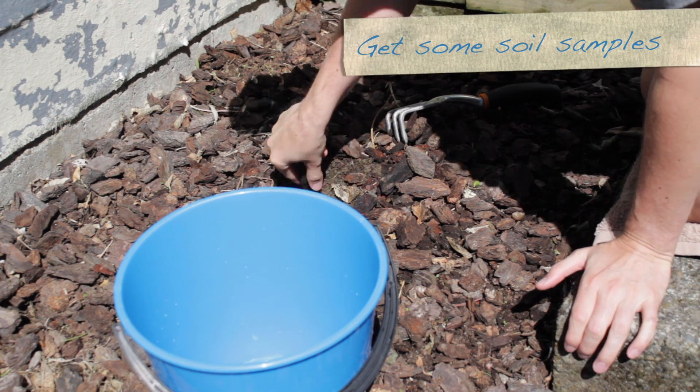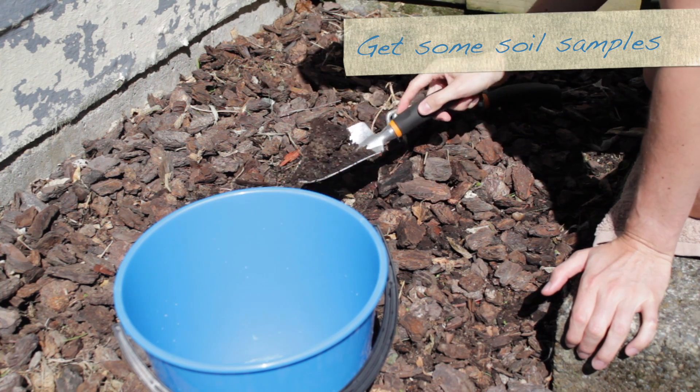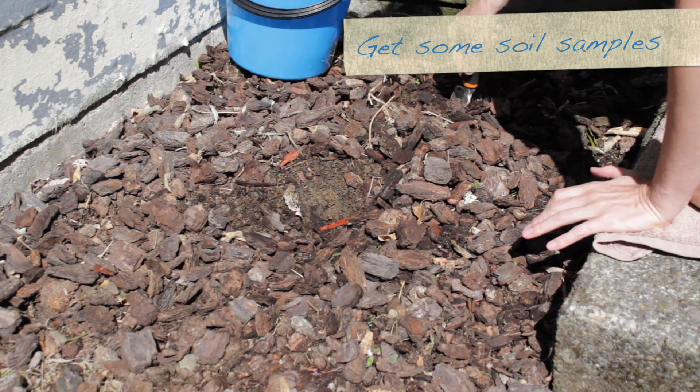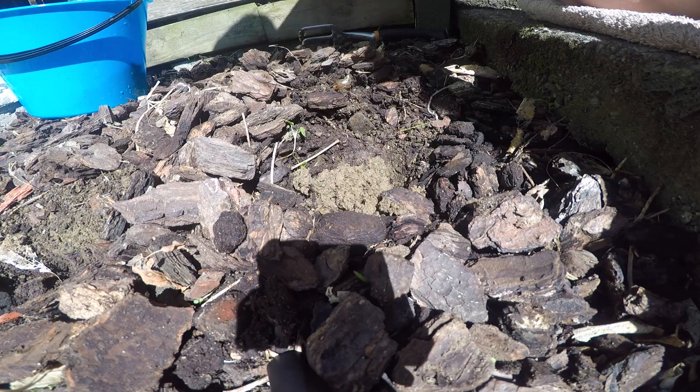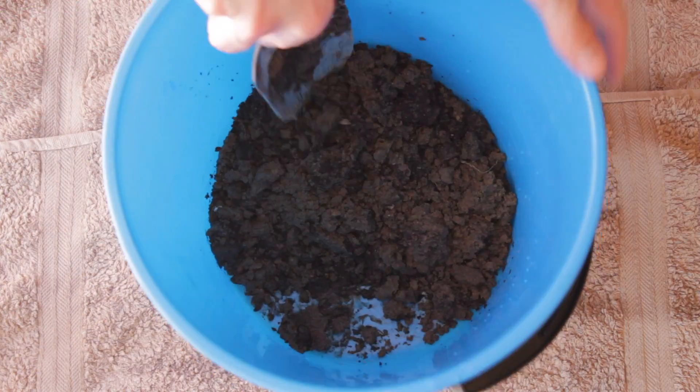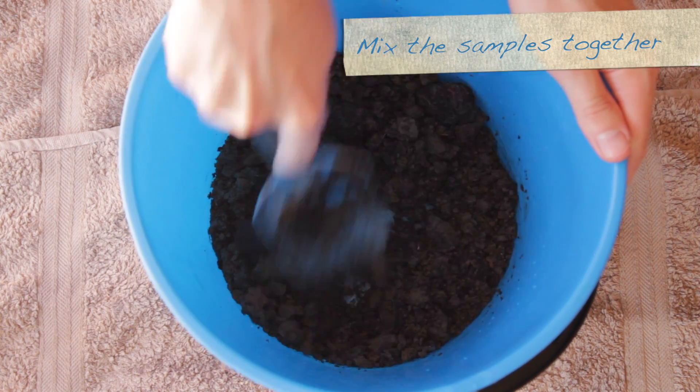First, we started off by taking a few soil samples from several locations across the bed, making sure to dig down vertically into the soil to get a good cross section. We mixed the three samples from across the bed together to get a good representation of the bed as a whole.